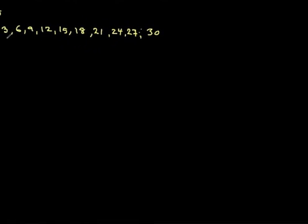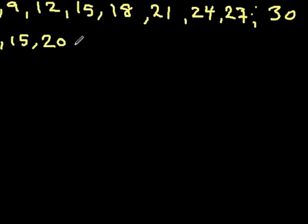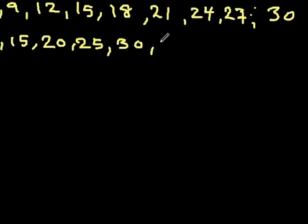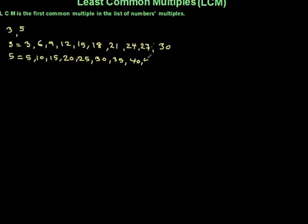Then I will write down multiples of 5 which are 5, 10, 15, 20, 25, 30, 35, and 40. I will go ahead with 45, 50. That's good enough.